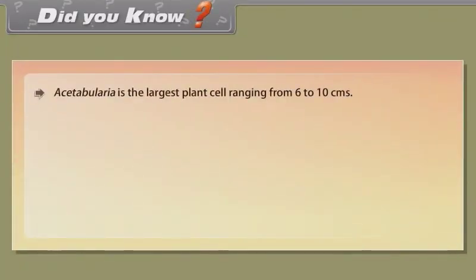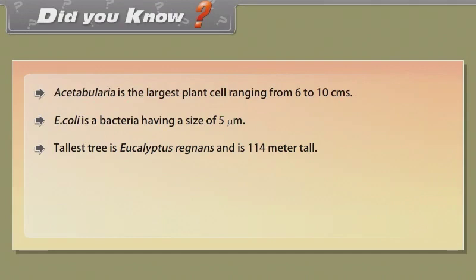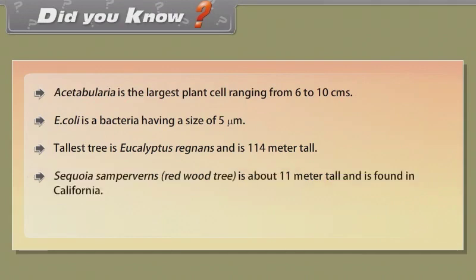Did you know? Acetabularia is the largest plant cell, ranging from 6 to 10 cm. E. coli is a bacteria having a size of 5 micrometers. The tallest tree is Eucalyptus regnans, which is 114 m tall. Sequoia sempervirens, a redwood tree, is about 11 m in diameter and is found in California. The elephant is the largest land animal.